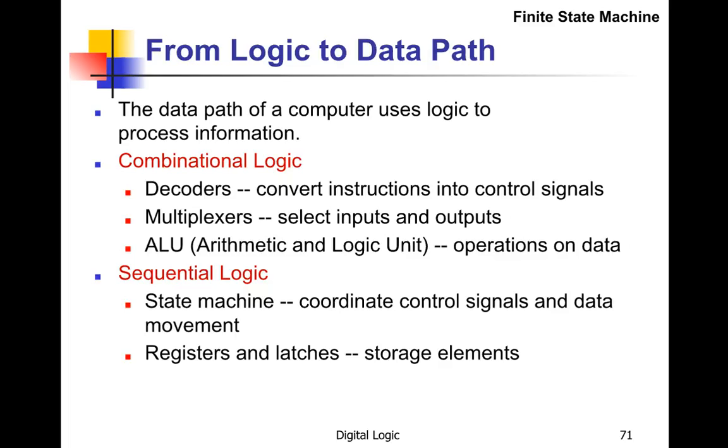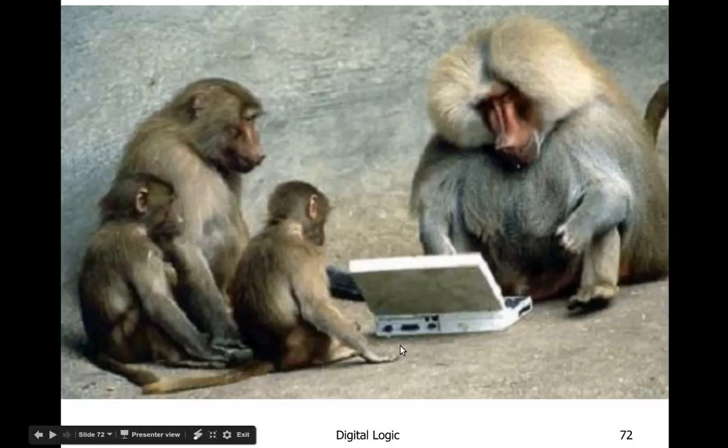So what do we do here? How does this work? We've got combinational logic and sequential logic. The combinational logic is made up of decoders, multiplexers, the ALU—that's the arithmetic logic unit—and the sequential logic is a state machine which coordinates things as registers and latches and memory. So that's what we use in the computer. That's the end of the digital logic lecture for assembly language.